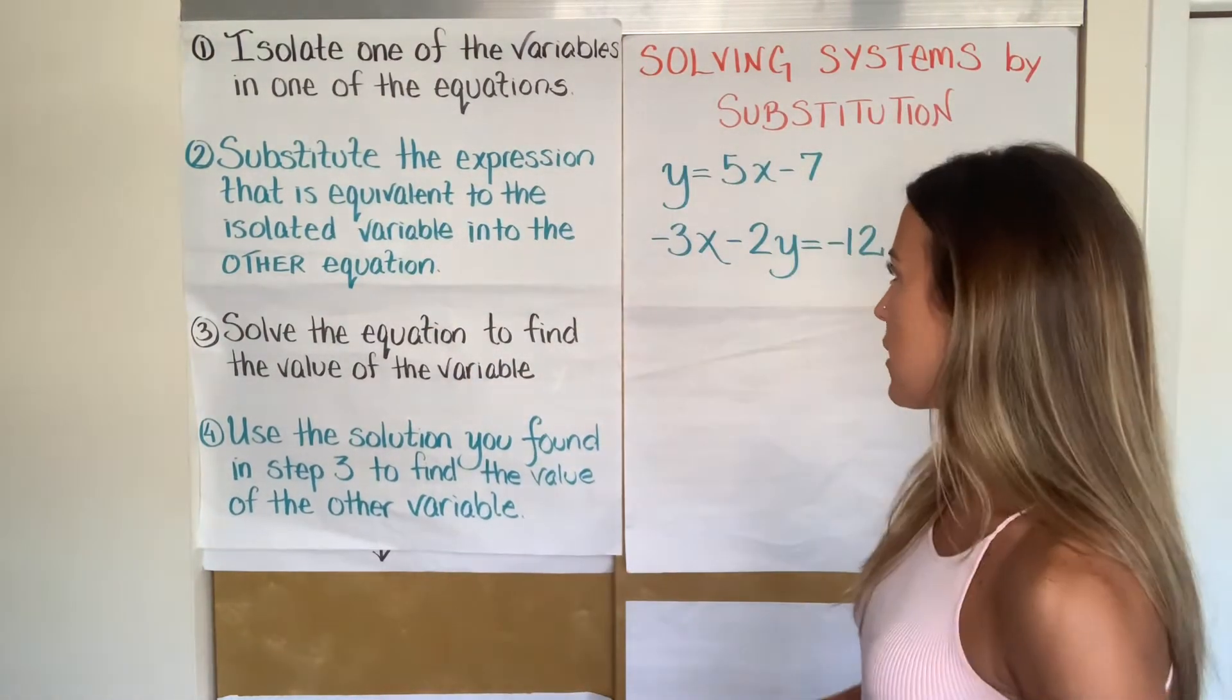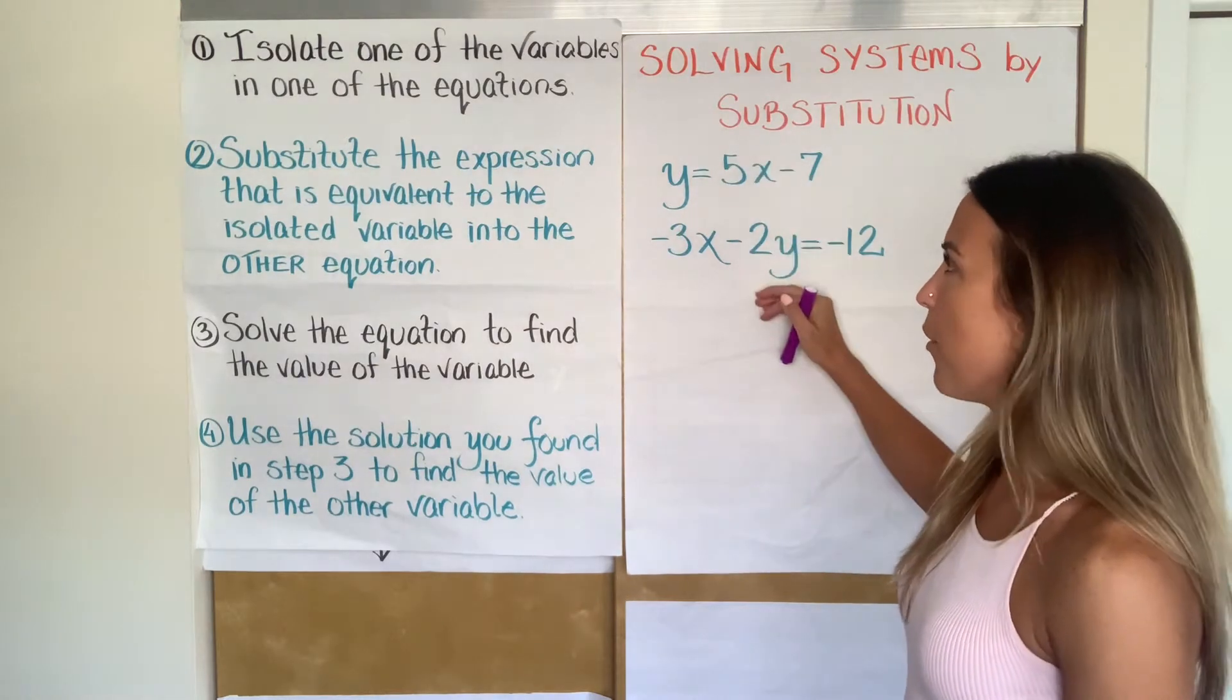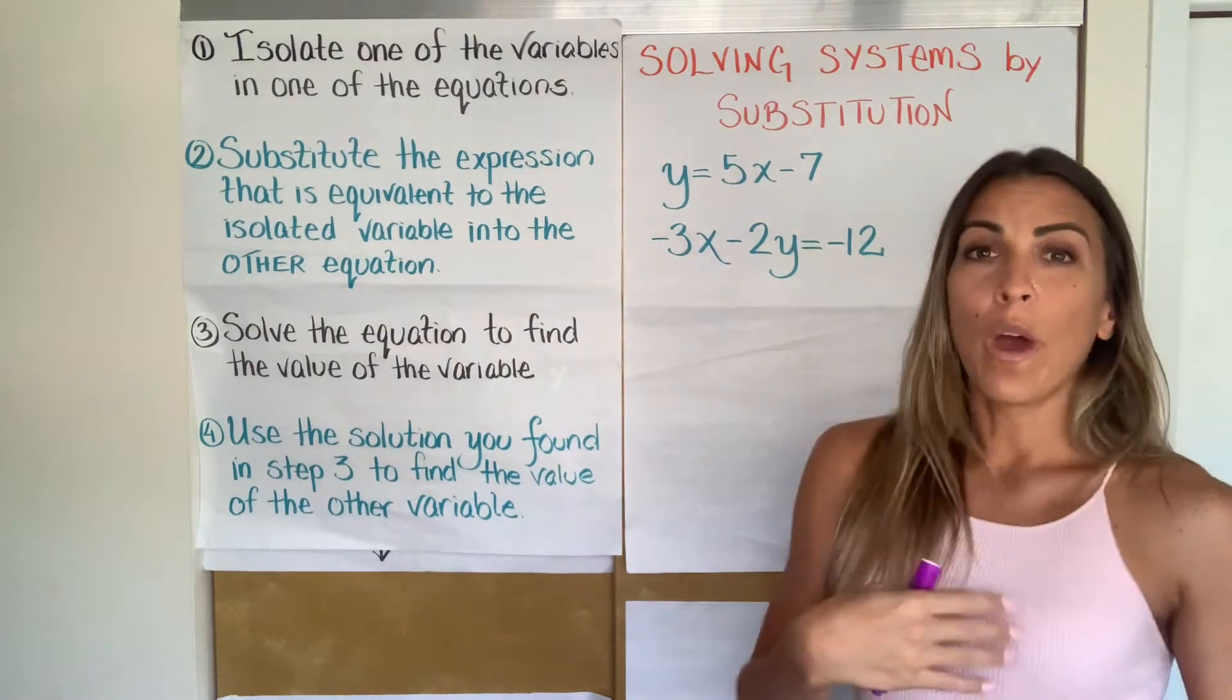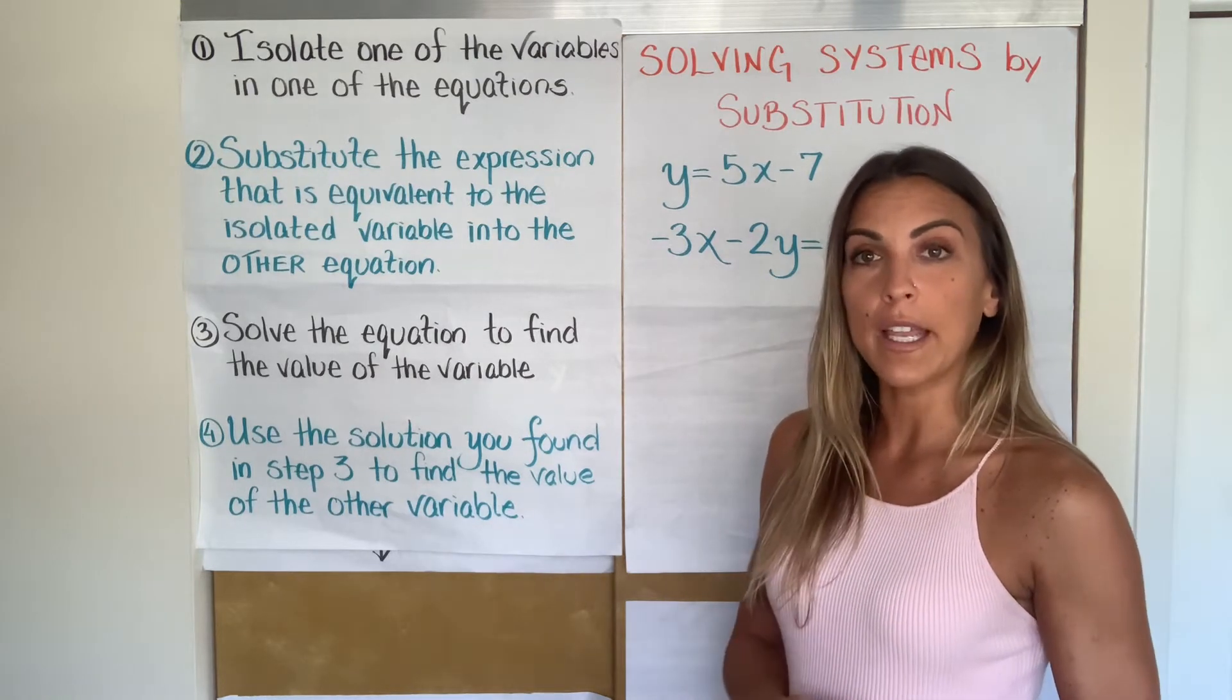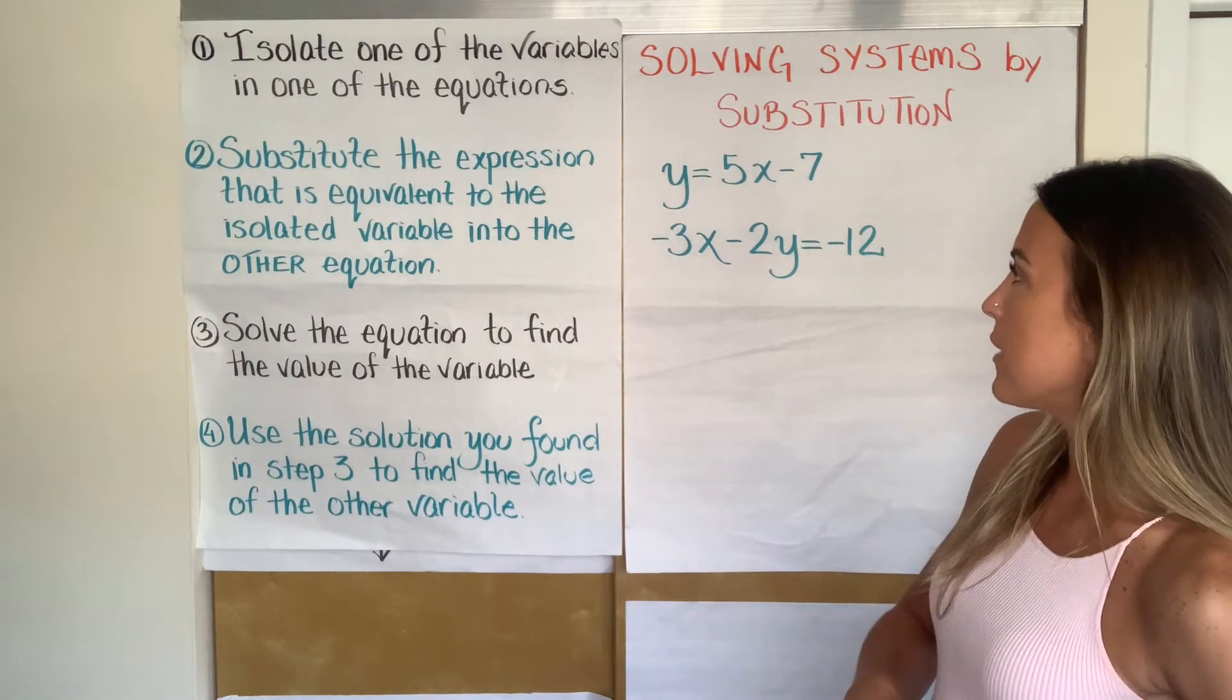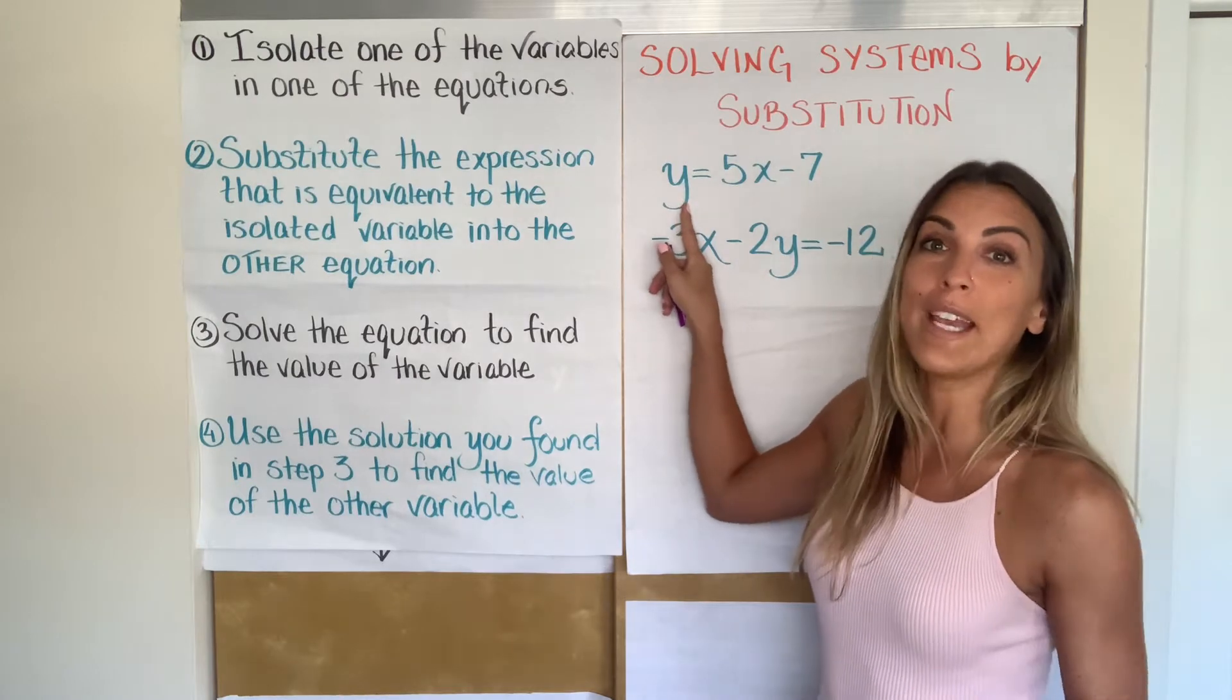So let's go to our problem. Leave the rest of the steps alone for now. Let's go step by step. Look at your problem and ask yourself, which is the easiest variable to isolate? Is it the X or is it the Y in the top equation or the bottom equation? I would suggest you pause the video and think about it for a second and then see if you got the right answer once we continue. So I'm wondering what the easiest variable is to isolate.